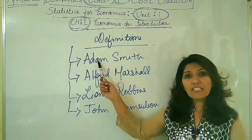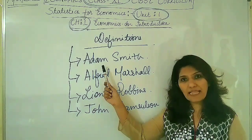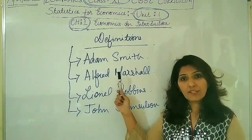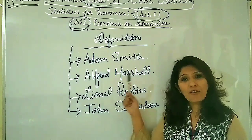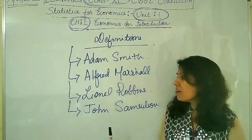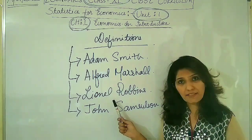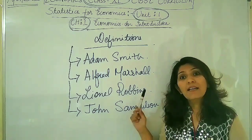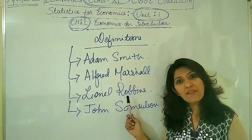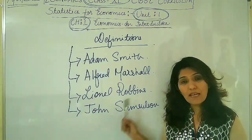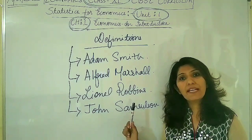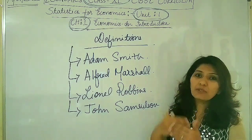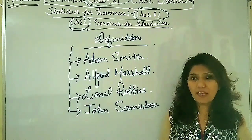The first definition was given by Adam Smith in the context of wealth — economics is a science of wealth. The second definition was given by Professor Marshall in the context of welfare — economics is a study of man in the ordinary business of life. The third definition was given by Robinson in the context of scarcity — economics is a relation between unlimited ends and scarce resources which have alternative uses. The last and most appropriate definition was given by Samuelson. I hope you understood the difference between all four definitions and the timeline in which these economists came and defined economics.